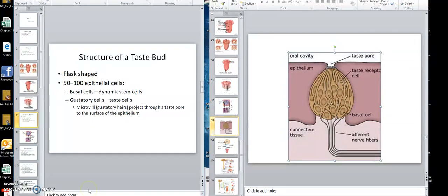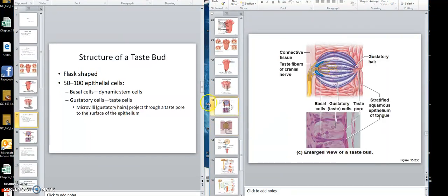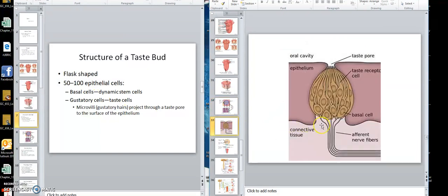Class, here is another picture of this. Flask-shaped, 50 to 100 epithelial cells. The basal cells, that's what it's hooked to. Now, let's look at here. Here are the afferent, the sensory neurons, hooked to those cells. The basal cells are stem cells to replace these here.